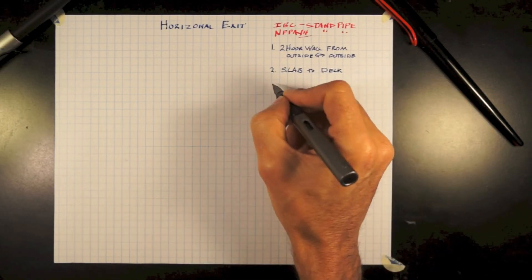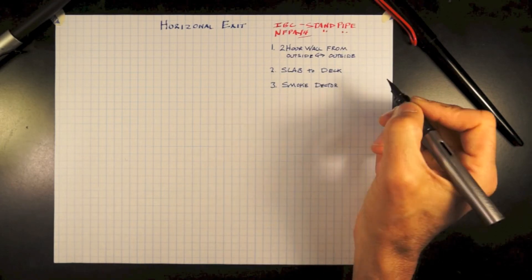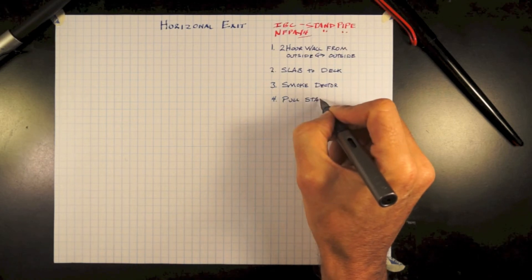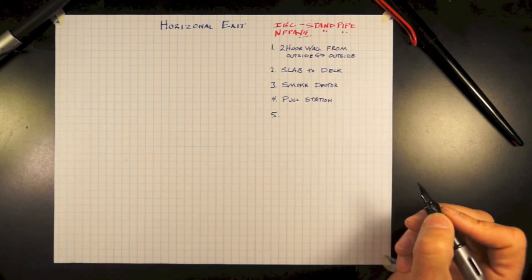You're required to have smoke detectors on each side of a horizontal exit, and you're required to have pull stations on each side if your building requires you to have pull stations at exits.